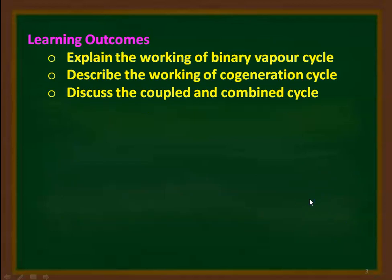The learning outcomes for students: at the end of the lecture, the student will be able to explain the working of the binary vapor cycle, describe the working of the cogeneration cycle, and discuss the coupled and combined cycle.